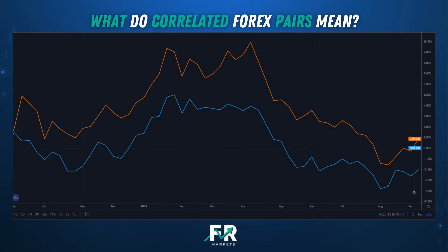So what do correlated Forex pairs mean? Currency pairs are correlated when they move dependent on each other. This can happen when the currencies in each pair are the same or include the same economies. For example, EURUSD and GBPUSD both contain USD as a common factor. On top of this, the Eurozone and Great Britain are closely tied economies trading together. These factors are a core reason for a correlated Forex pair.